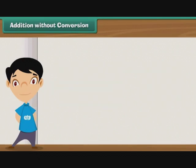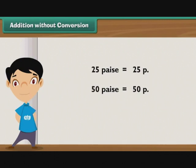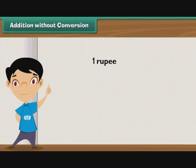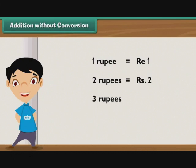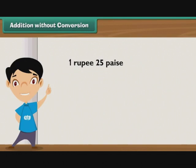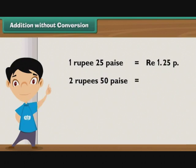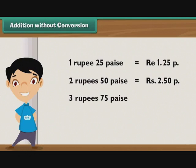Addition without conversion. We can write 25 paise as 25 P; in the same way, we can write 50 paise as 50 P and 75 paise as 75 P. We can write 1 rupee as ₹1; 2 rupees as ₹2, 3 rupees as ₹3, 4 rupees as ₹4 and so on. So, 1 rupee 25 paise is written as ₹1.25P, 2 rupees 50 paise as ₹2.50P, and 3 rupees 75 paise as ₹3.75P.